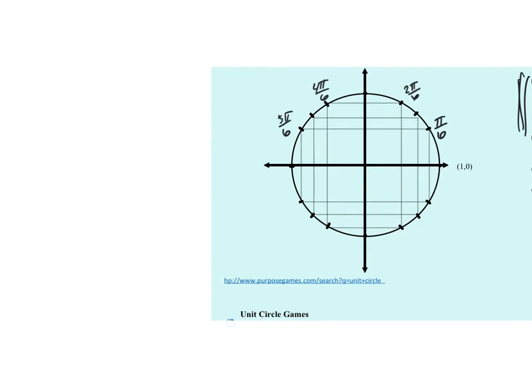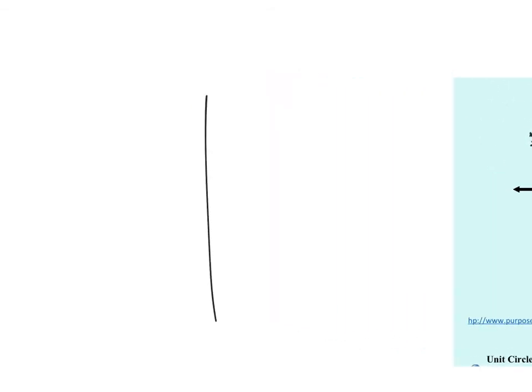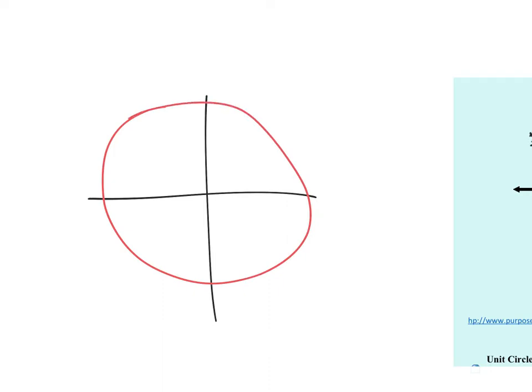What you also need to see is how this circle — if it's a unit circle — has a radius of one. I'm going to step over here because I think this will help. You make a circle and an x-y axis on the inside of it.